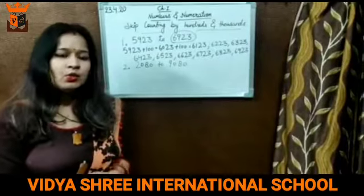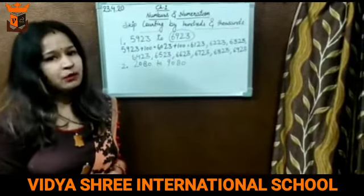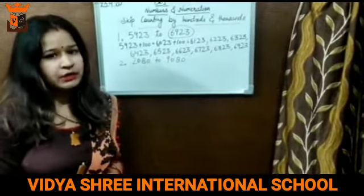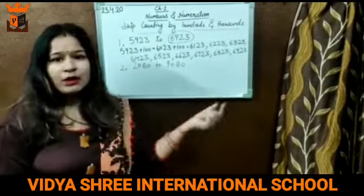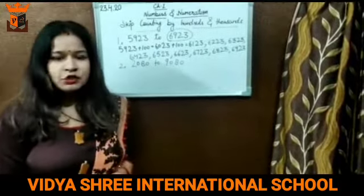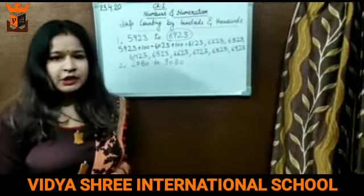Similarly, when you are skip counting by 1000, only the thousands place value will be changed. After that, the hundreds, tens, and ones place values will remain the same. Now see the example of 1000 skip counting.